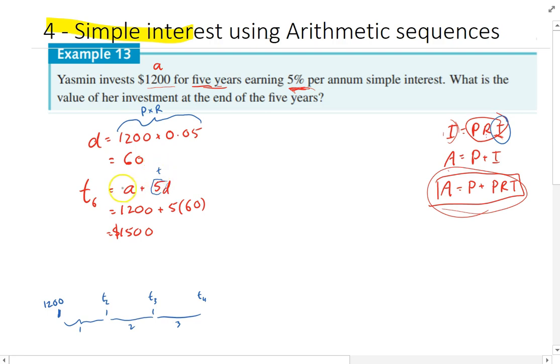And then I add it to A, and A is actually, well, this A is actually P, not that A. Okay, so that's simple interest using arithmetic sequences.